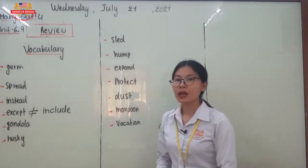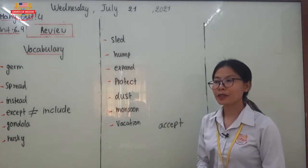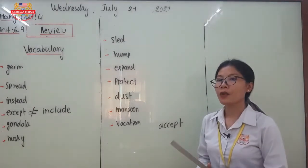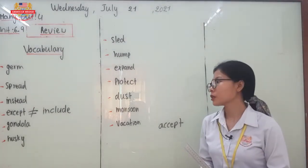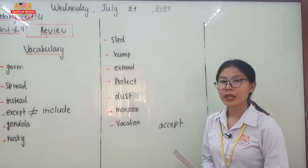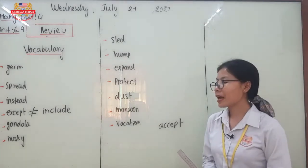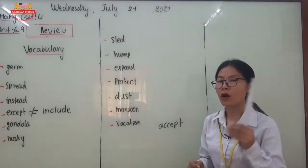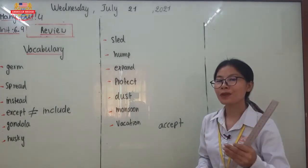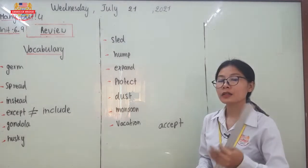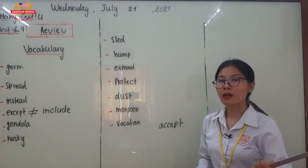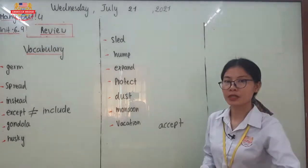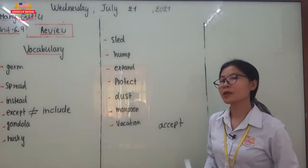Let's go to 'gondola.' Gondola refers to the kind of boat that we use in Venice to ride on the water. The next word is 'husky.' Husky refers to the kind of strong dog that we use to pull the sled on the snow.